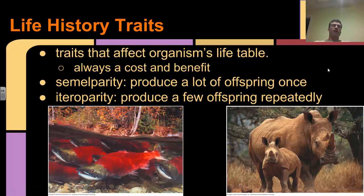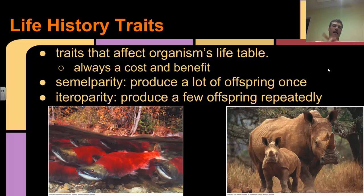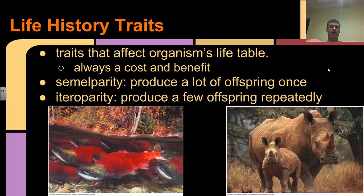Another thing we can look at is life history traits - a large set of theories used to describe populations. These are traits that affect an organism's life table: mortality, vitality, things like that. There's always a cost and a benefit. One trait is semelparity versus iteroparity. Semelparity is where you produce a lot of offspring once in your life and that's it - examples would be salmon. They live in the Pacific Ocean, swim up the rivers, produce a lot of offspring, and then they die. They only get one chance to produce offspring, and they don't get to take care of them. There's a cost and a benefit - the benefit is they produce a whole bunch of offspring.